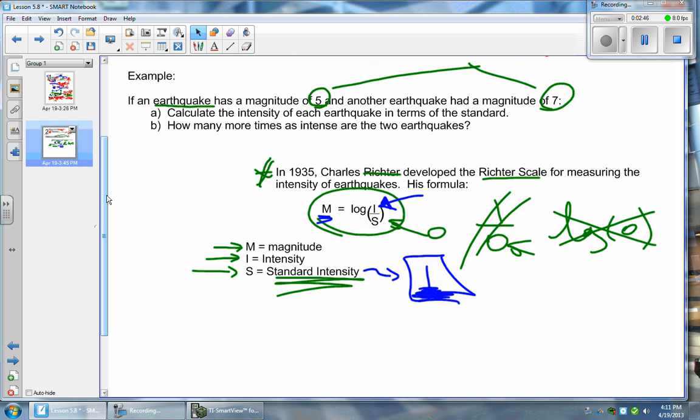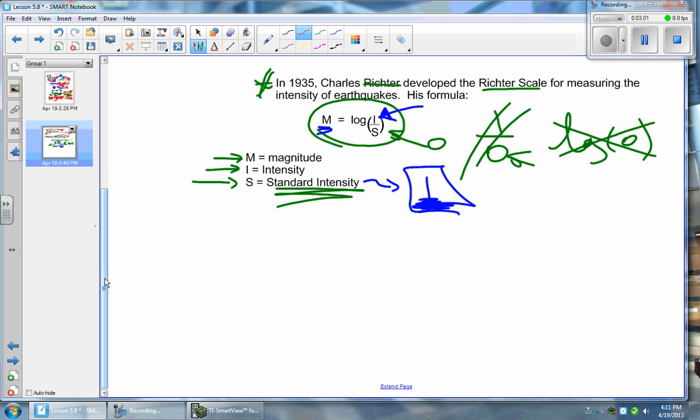The question basically says you've got a magnitude of 5 and another magnitude of 7, and it says to calculate what is the intensity of each earthquake in terms of the standard. Okay, let's figure that out. So we want to be able to say I equals something times the standard. That's what you're after. And that's the something that'll tell you, and then we'll be able to compare the magnitude 5 to the magnitude 7 and see how much more powerful it is.